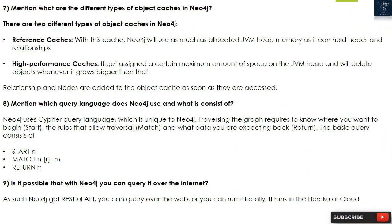Question 7: What are the different types of object caches in Neo4j? There are two types: Reference caches — Neo4j will use as much allocated JVM heap memory as it can to hold nodes and relationships. High performance caches — assigned a certain maximum amount of space on the JVM heap and will delete objects whenever it grows bigger than that. Relationships and nodes are added to the object cache as soon as they are accessed.